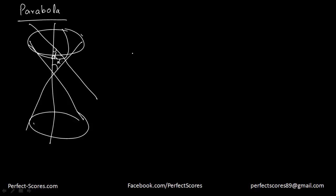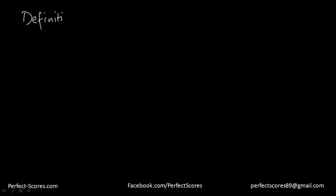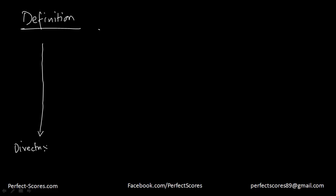In this video, we're going to be talking about the definition of parabola and various properties of a parabola. So what is the definition of a parabola? A parabola has certain features. The first thing it has is actually a line, and that line is actually known as the directrix. And let's suppose this is our parabola here.